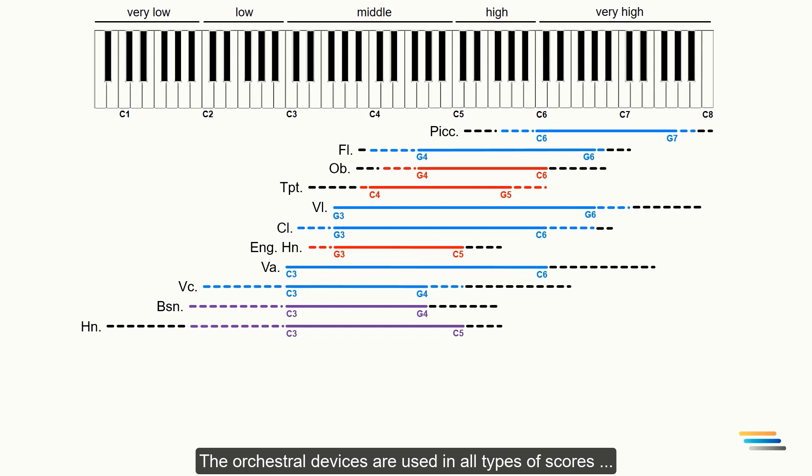The orchestral devices are used in all types of scores such as monophonic, homophonic, polyphonic, chordal, heterophonic and so on. By using this chart you will get a lot of devices. Please follow me and do the same step by step.